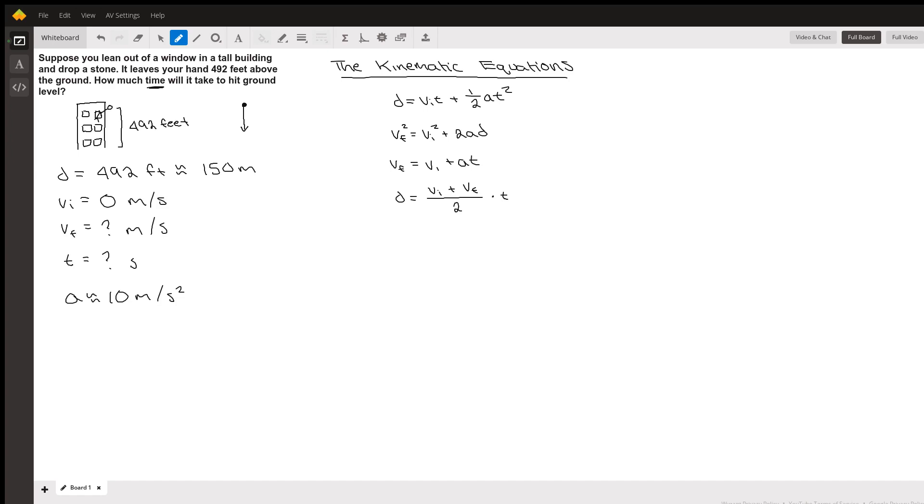With this information, we can see which one of these kinematic equations we can use to solve for time. If we look at the first one, we know the distance so we could plug in for d, we know the initial velocity so we could plug in for vi, we're trying to solve for time so we're glad that variable is there, and we know the acceleration. So it looks like we can use the first one to solve for time.